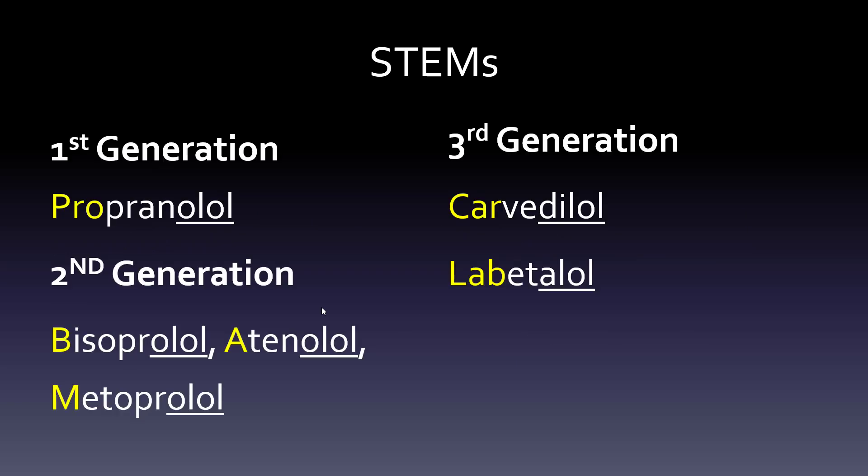The stems are a little bit different, but also cause a problem. The first generation stem '-olol' is the same as the second generation stem '-olol' (O-L-O-L). That causes a problem because propranolol has beta-1 and beta-2 blocking activity, while second generation drugs like bisoprolol, atenolol, and metoprolol have beta-1 only. So you need the mnemonic to separate them.